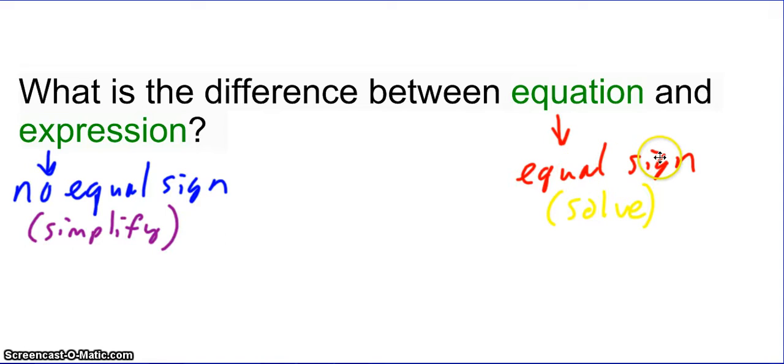Okay, an equation has an equal sign. We solve an equation. An expression does not have an equal sign. It can still have mathematical operations. There can be multiplication, addition, subtraction, division, exponents. All of that can be in an expression, just like they can be in an equation, but there is no equal sign, so we cannot solve an expression.